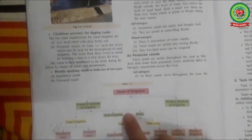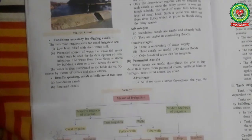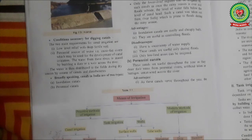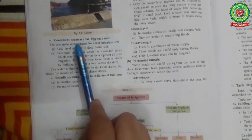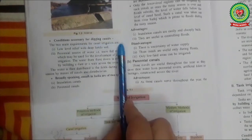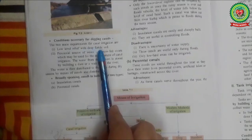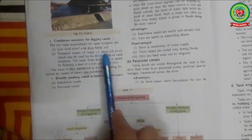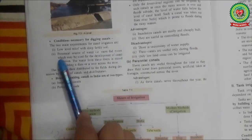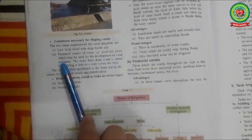The conditions necessary for digging a canal are: number one, flat land with fertile soil; number two, a perennial water source so the canal has water throughout the year. The two main requirements for canal irrigation are low-level relief with deep fertile soil, which makes it easy to dig canals, and a perennial source of water — snow-fed rivers which may be used for the development of canal irrigation.